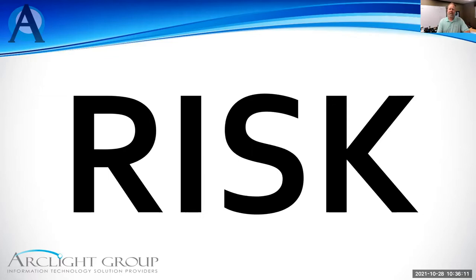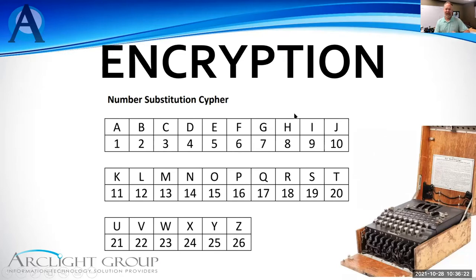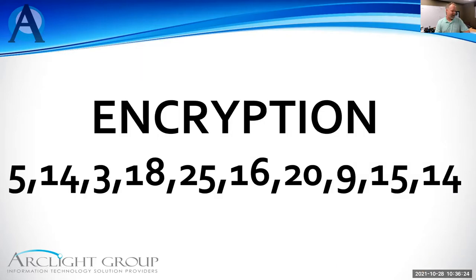Going a little further — here's an example of a number substitution cipher. The word 'encryption,' if you substitute each letter for a number based on the cipher, becomes something like 514, 318, 25, and so on. Each letter is substituted for a number, and you can use that to send a secret message that someone must use the cipher to decode.